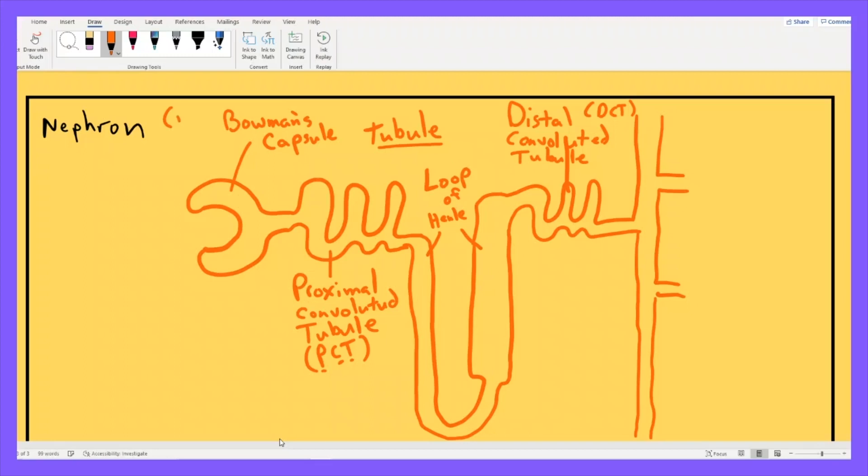Bowman's capsule, sometimes abbreviated BC. Proximal convoluted tubule. Loop of Henle. Distal convoluted tubule. And then over here, this vertical section is called the collecting duct. So now we have named the parts of the nephron tubule. Bowman's capsule, proximal convoluted tubule, loop of Henle, distal convoluted tubule, and collecting duct.